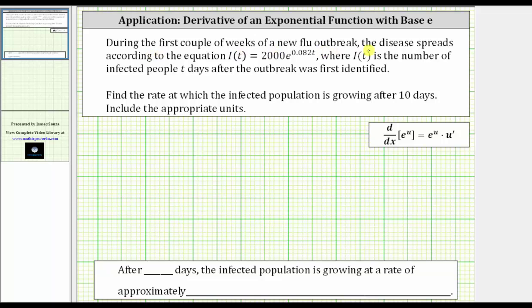During the first couple of weeks of a new flu outbreak, the disease spreads according to the equation I(t) = 2000e^(0.082t), where I(t) is the number of infected people t days after the outbreak was first identified. Find the rate at which the infected population is growing after 10 days. Include the appropriate units.